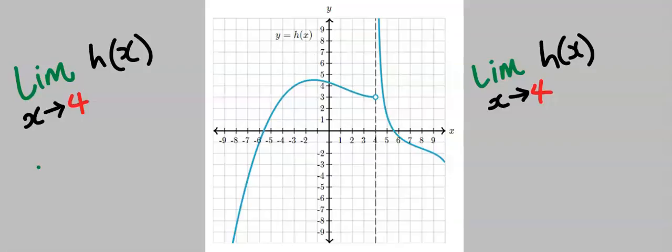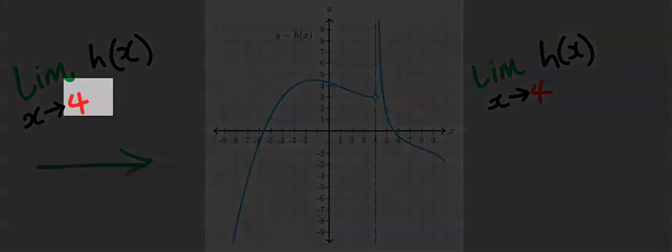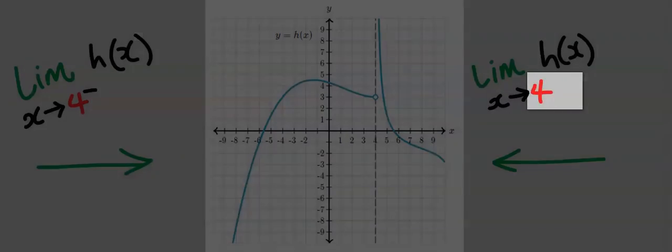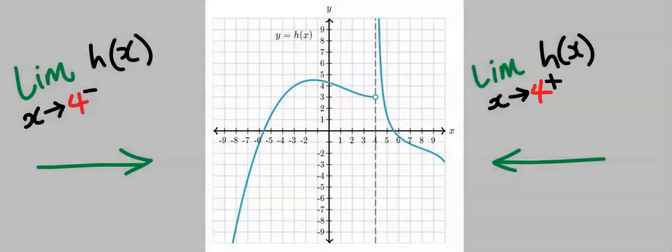Next, we are going to approach this function from the left and likewise from the right. Let's consider from the left. From the left, the limit of h(x) as x tends to 4 is 3.